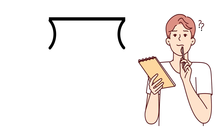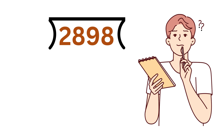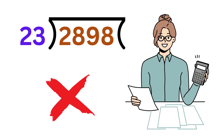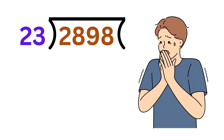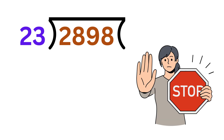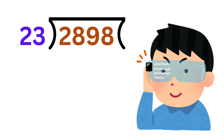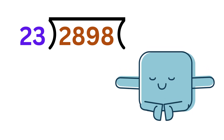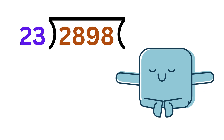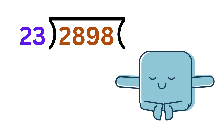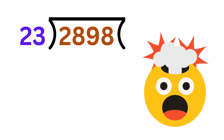Suppose we are asked to find the value of 2898 divided by 23 without using a calculator. I know many of you will get scared because of the long division method taught in school. But do not fear when BrainStation is here, because there's a much easier way to divide big numbers like this, and it'll blow your mind.